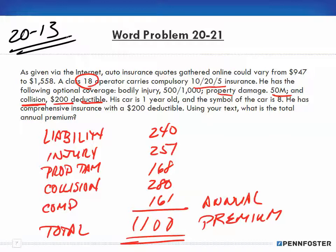If you go back and do problem 20-13 and compare it to this problem, even though you're talking about liability, injury, property damage, collision, and comprehensive, the variables from one problem to the next are different, so you have to look up the different amounts in the table. That's why it's important to read the textbook. Pay attention to the different variables in order to determine the different premiums for each facet, and then add them all up.